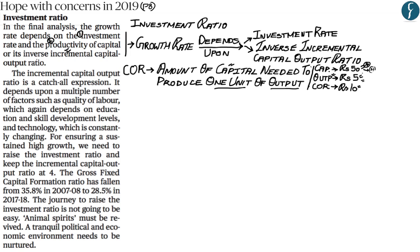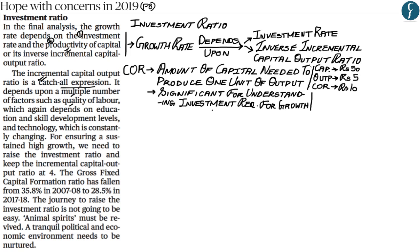Capital output ratio varies from industry to industry and country to country. As the author highlights, it is a catch-all expression depending on multiple factors such as quality of labor. It is important for economic planners because it helps them understand the required investment for achieving a particular amount of economic growth. For example, if a country has a GDP of rupees 100, invests rupees 30, and grows at 6%, the capital output ratio would be rupees 5.